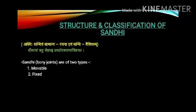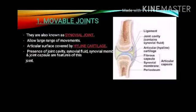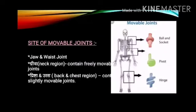Sandhi are of two types: movable joints and fixed joints. Movable joints are also known as synovial joints. They allow a large range of movements. The articular surface is covered by hyaline cartilage. Features include the presence of a joint cavity, synovial fluid, synovial membrane, and joint capsules.